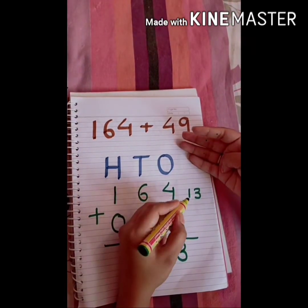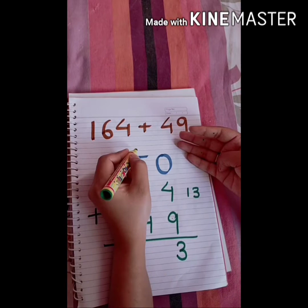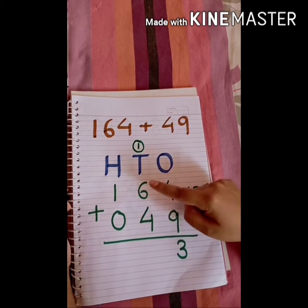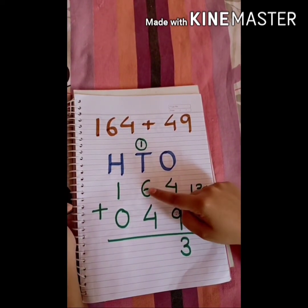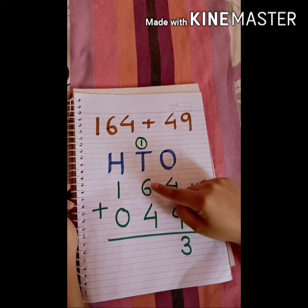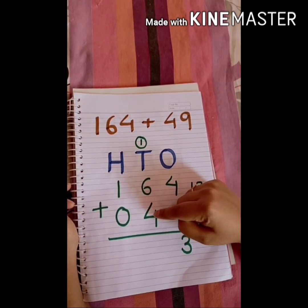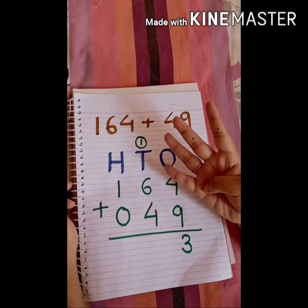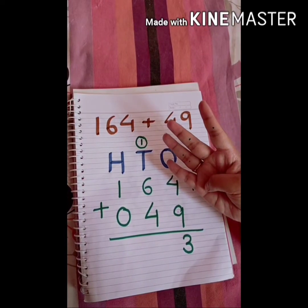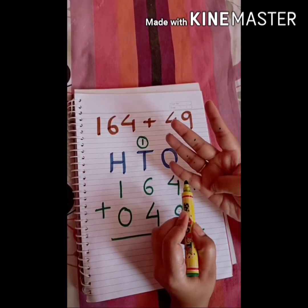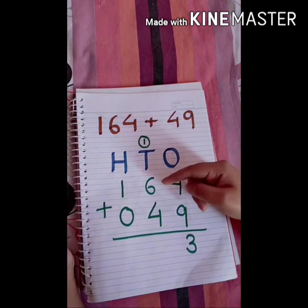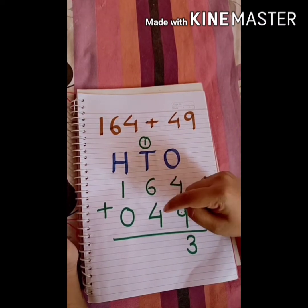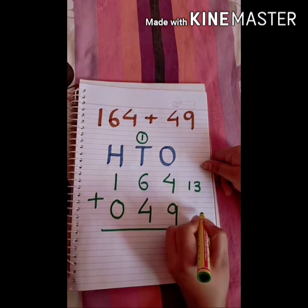We carry forward 1 to the tens column. Now add the tens digits: 6 plus 4. We keep 6 in mind and count 4 on our fingers — seven, eight, nine, ten. So 6 plus 4 equals 10, and we have the carry of 1, so ten plus one equals eleven.